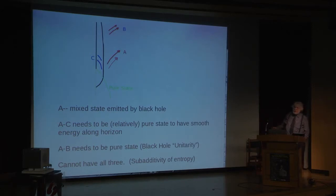But there's a problem with that. The problem is that if A is strongly entangled with B, then A cannot be strongly entangled with something else. In particular, A cannot be strongly entangled with C. C and B are different. And if A is not strongly entangled with C, then the quantum state in the vicinity of the horizon does not look like the vacuum state.